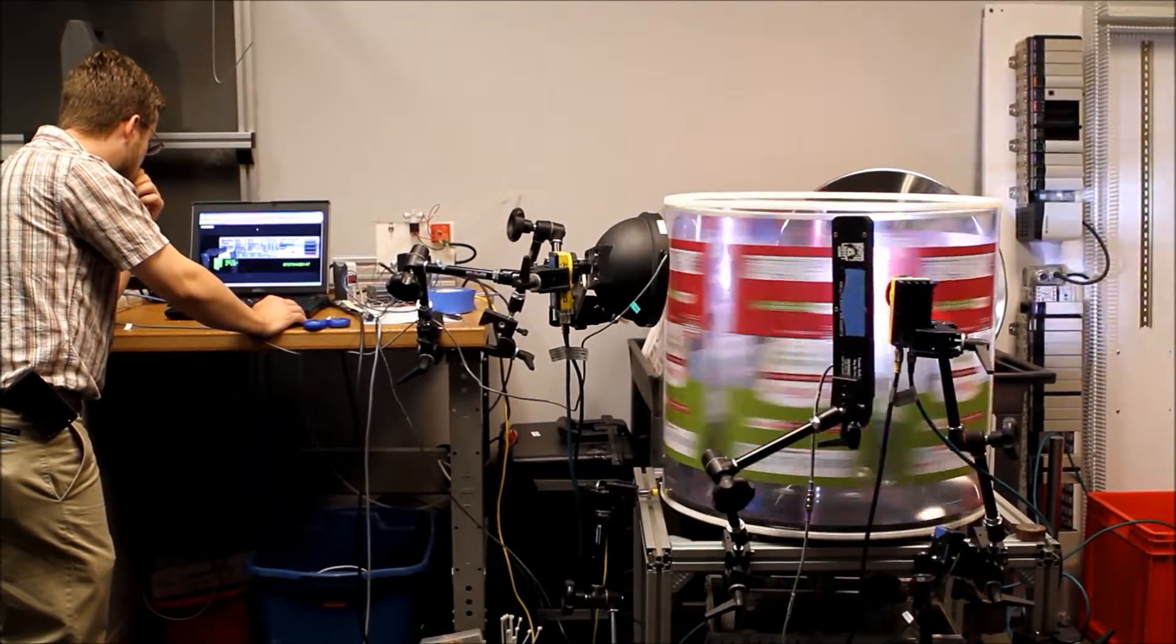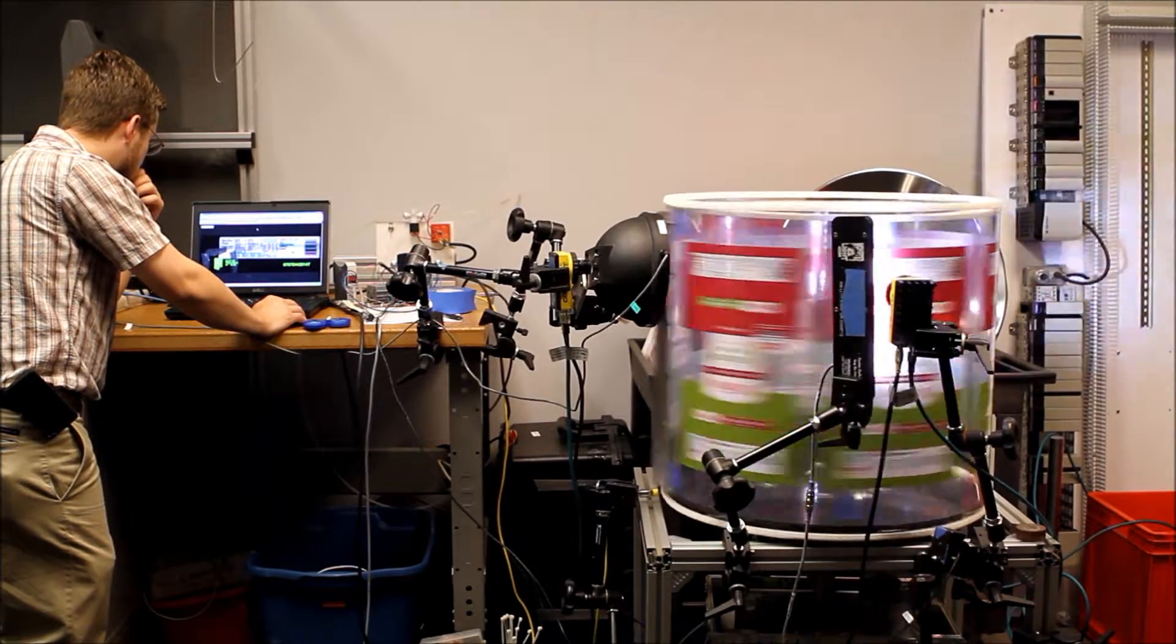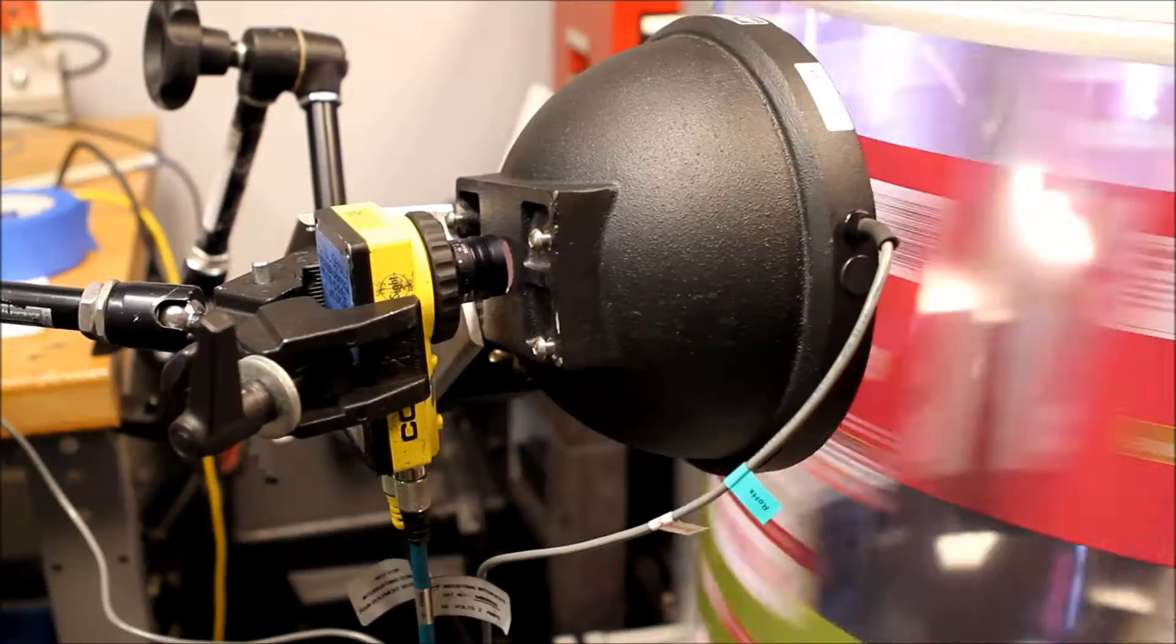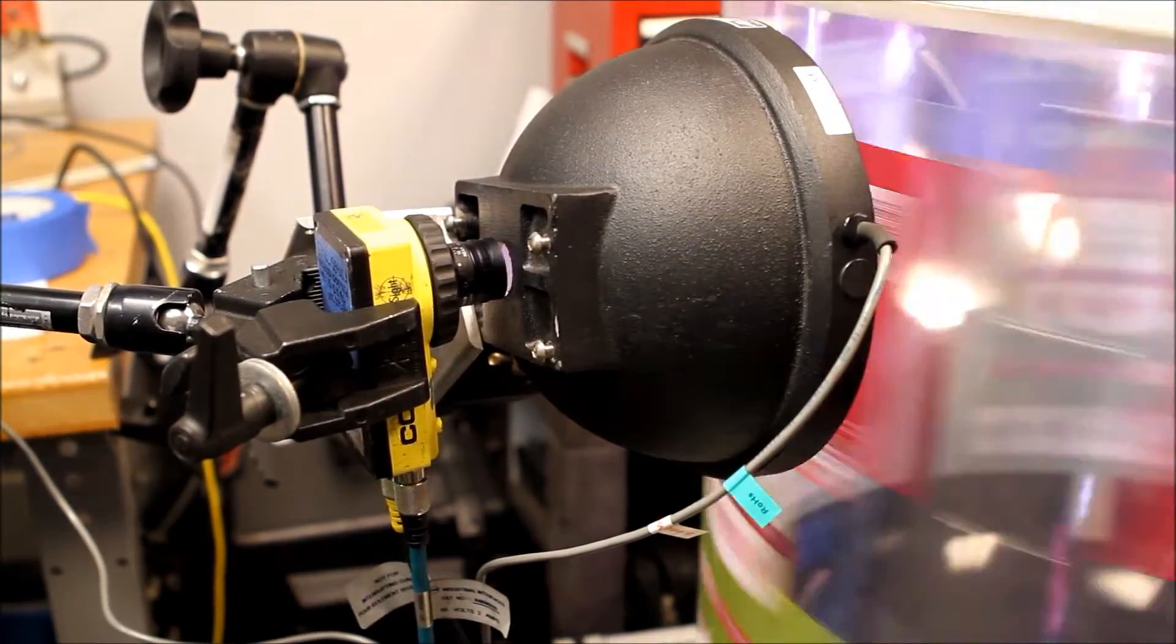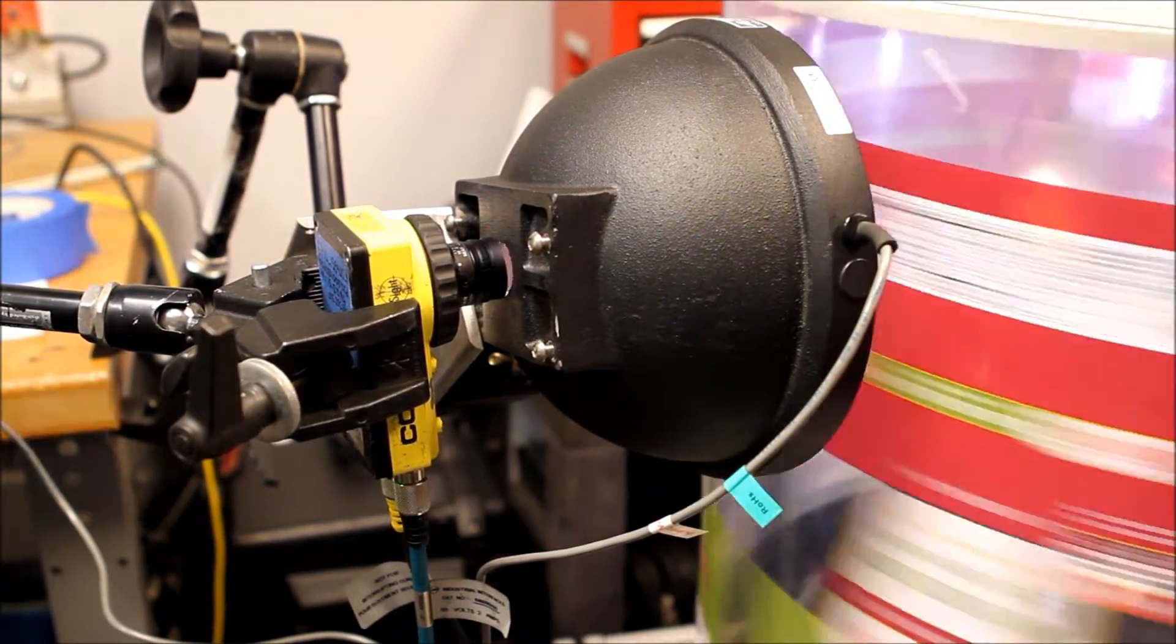In this particular setup, glossy film packaging is being inspected at a rate of 300 parts per minute. The first method of inspection utilizes an area camera and a dome light to provide even lighting across the surface of the film.